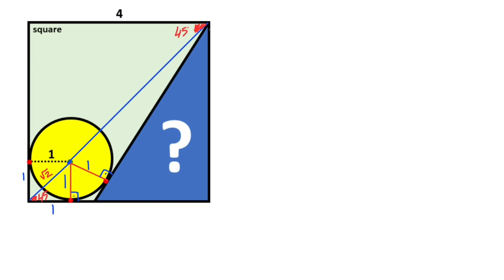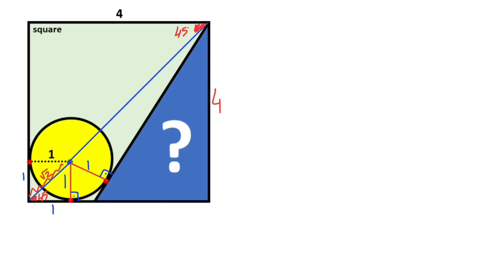We know that here is also four units. So if there's a four-unit side opposite 45 degrees, opposite 90 degrees, here must be equal to 4 root 2. So if here is root 2, that means 3 root 2 is left here.